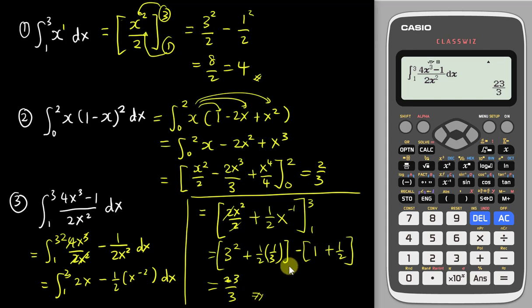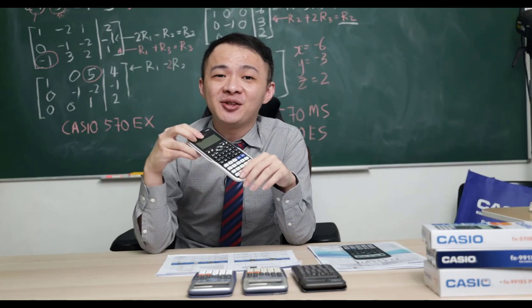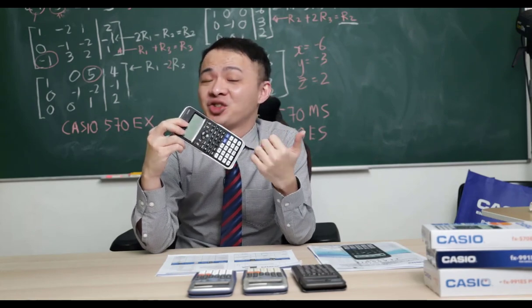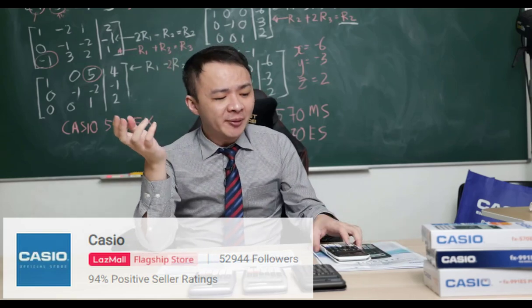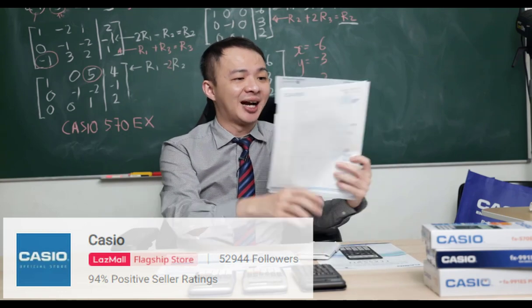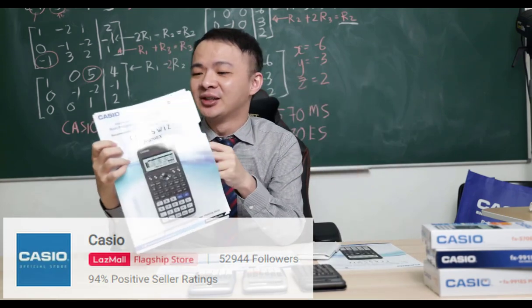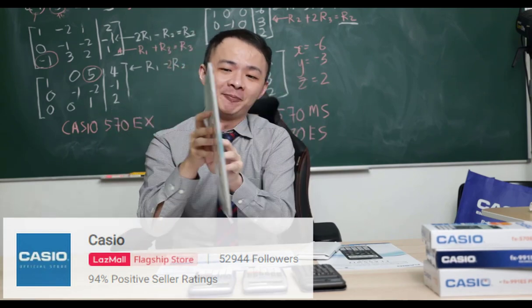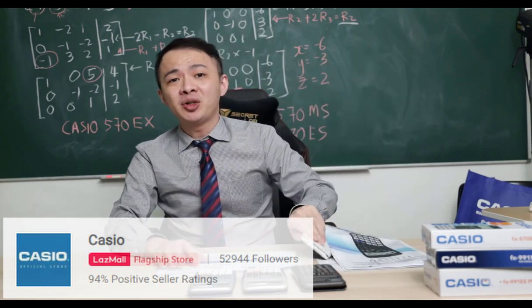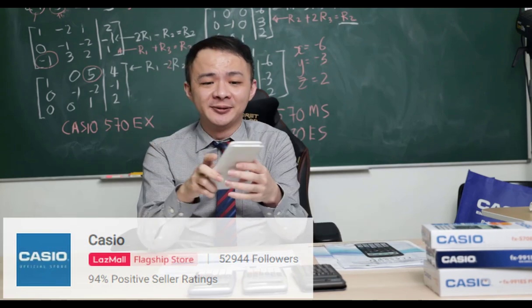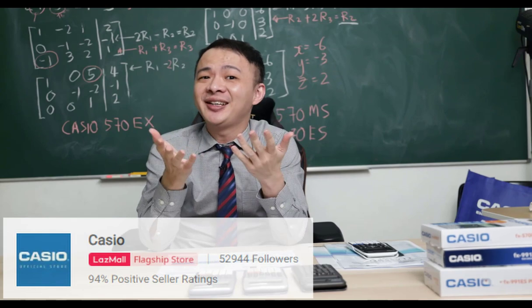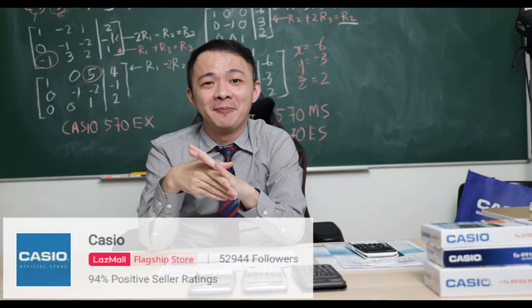That's how easy it is to use the calculator to solve integration questions. I hope you find this video helpful. If you're interested in buying this calculator, the Lazada link to the Casio flagship store is in the description below. Casio Malaysia is currently running a promotion — buy the calculator and get a free Casio alpha file, which is waterproof. Also, use my name as a promo code for an extra five ringgit discount. Post any questions in the comments below — see you in the next video, bye!